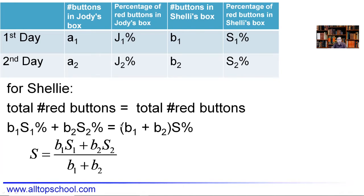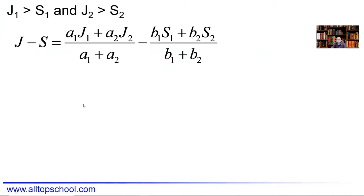Now we want to find the difference J minus S and make it as small as possible. We have J expressed as a fraction and S expressed as a fraction. The constraint is that on both days Judy's percentage is always greater than Shelly's — so J1 > S1 on day one, and J2 > S2 on day two. We need to minimize J minus S under this condition.